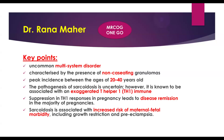Some key points regarding sarcoidosis: what is sarcoidosis? It's a multi-system disorder usually characterized by non-caseating granulomas. You have to differentiate between the caseating and non-caseating types. The peak age is between 20 and 40.